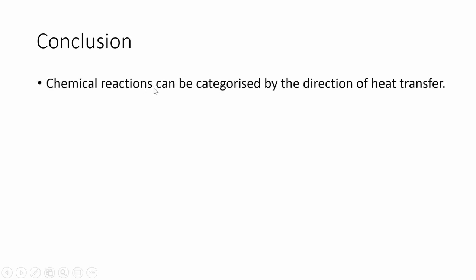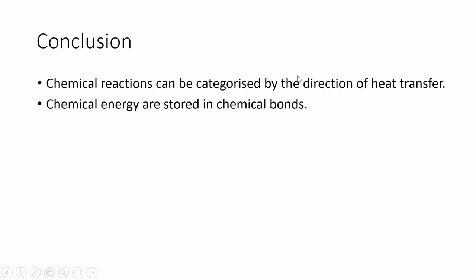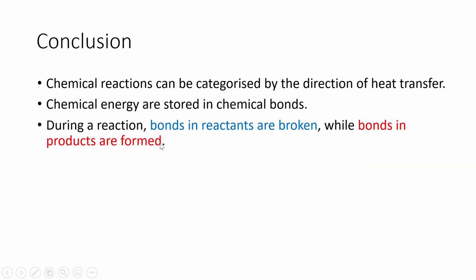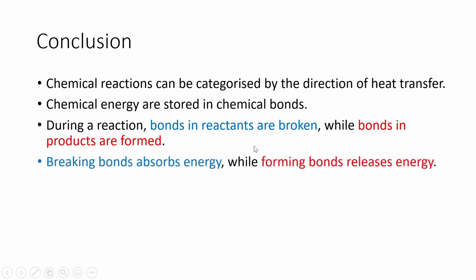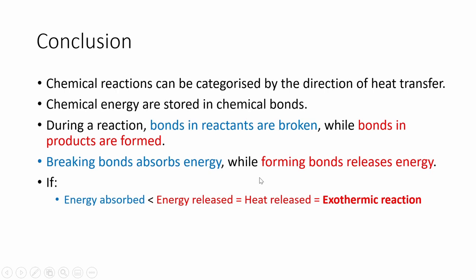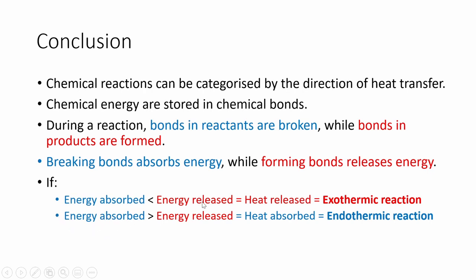Let's do a recap of everything covered. Chemical reactions can be categorized in various ways, one of which is by the direction of heat transfer. Chemical energy within molecules is stored within chemical bonds, and different chemical bonds contain different magnitudes of energy. During a chemical reaction, bonds in reactant molecules are broken while bonds in product molecules are formed. Breaking bonds absorbs energy; forming bonds releases energy. If less energy is absorbed than released, there is net heat energy released into the surroundings — this is an exothermic reaction. If more energy is absorbed than released, there is net energy flow from the surroundings into the system — this is an endothermic reaction.